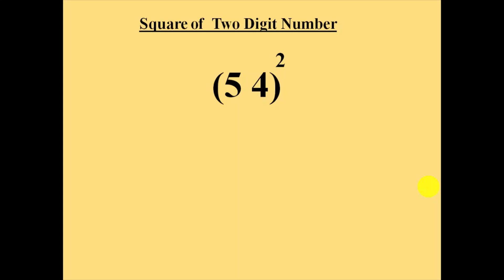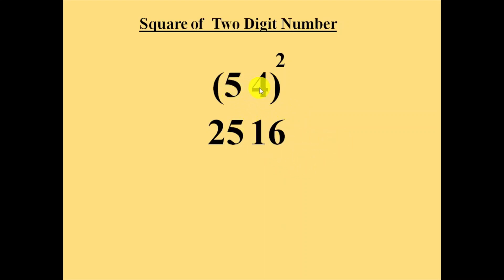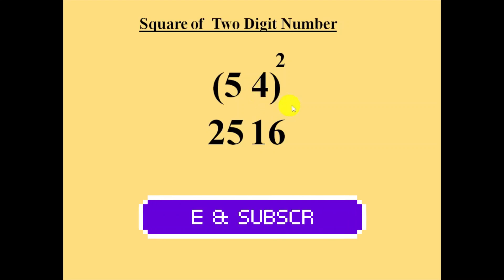First we will calculate the square of number 5 and write down here. Then we will calculate the square of number 4 and write down here. Later we will multiply 5 with 4 and the result again we will multiply with 2. Like 5 into 4 is 20, and 20 into 2 is 40. That 40 we will write down here.